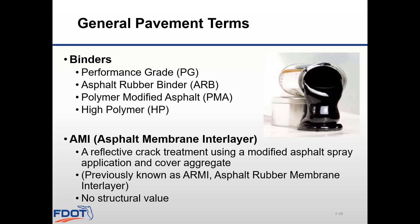An AMI is an asphalt membrane interlayer — you may have heard this called ARMI in the past, but now we simply call it AMI. It is a reflective crack treatment that uses a modified asphalt spray application with a layer of aggregate placed on top of it. The cover aggregate normally consists of number six stone, slag, or gravel, so a layer thickness of one-half inch may be used. AMI is placed underneath the new asphalt layer to resist the stress and strain of reflective cracks and delay their propagation into the new pavement. An AMI layer has no structural value.